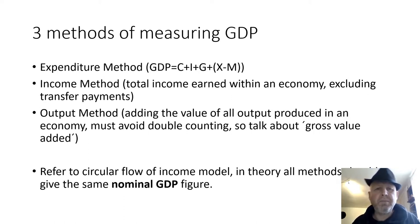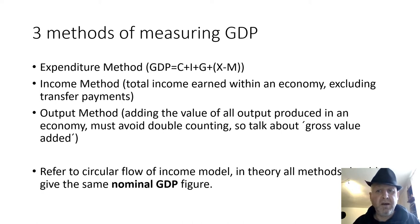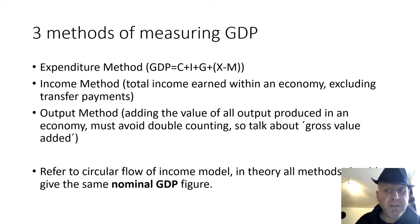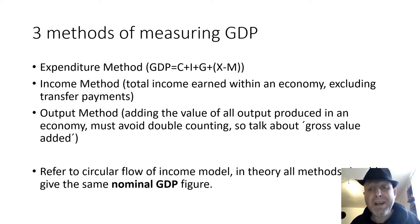If you're puzzled about this, refer to your circular flow of income model. Basically, households sell their factors of production, get income in return from firms, and spend that income on goods and services. All three methods in theory should give the same nominal GDP figure. In real life you may get different figures depending on how you collect the information, but for IGCSE we look for the most theoretically correct answer — so in a multiple choice question, choose the answer that is correct in theory.